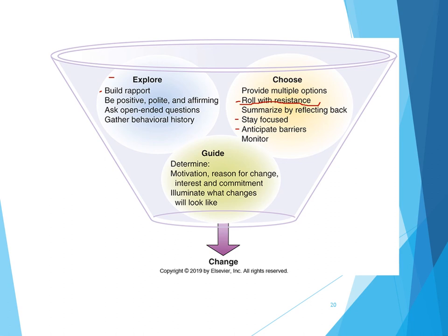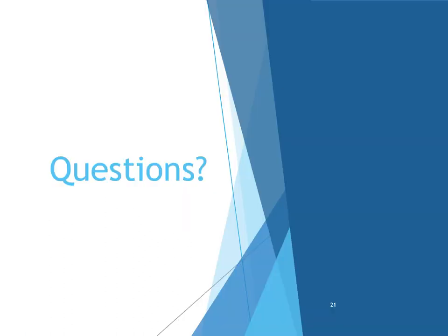For example, with tobacco cessation: the average person who smokes spends about $2,292 a year on cigarettes. Asking a patient 'what do you think you could do with $2,292?' can get them thinking that maybe there is a real reason behind making this change. And that is the end of Chapter 21 — let me know if you have any questions.